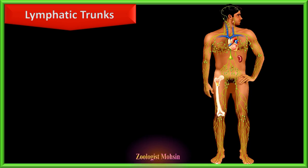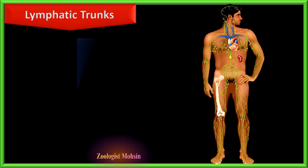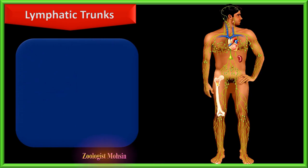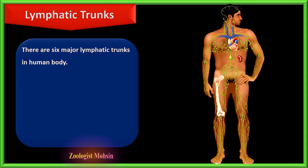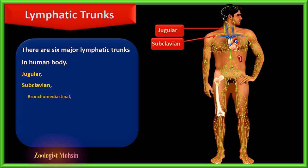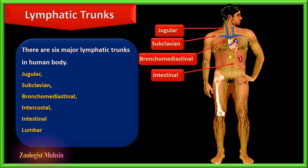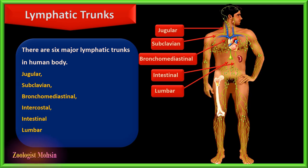The collecting vessels then converge to larger vessels called lymphatic trunks. There are six lymphatic trunks: jugular, subclavian, bronchomediastinal, intercostal, intestinal, and lumbar. The intestinal trunk is single while all others are paired.